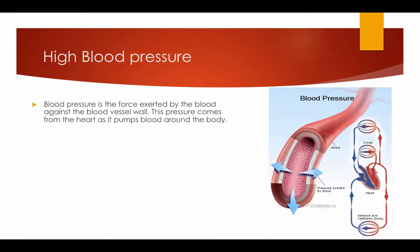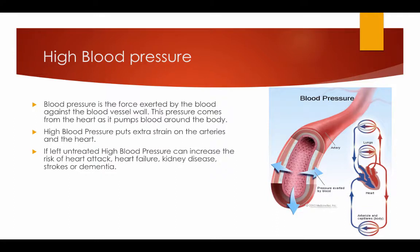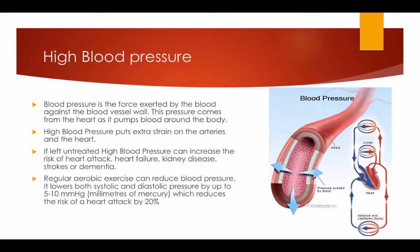High blood pressure: blood pressure is the force exerted by the blood against the blood vessel walls, and the pressure comes from the heart as the blood pumps around the body. High blood pressure puts extra strain on the arteries and the heart. If left untreated, high blood pressure can cause an increase in heart attack, heart failure, kidney disease, strokes, or dementia. Regular aerobic exercise can reduce blood pressure — it lowers both systolic and diastolic pressure by up to 5–10 mmHg, which reduces the risk of heart attack by 20%.